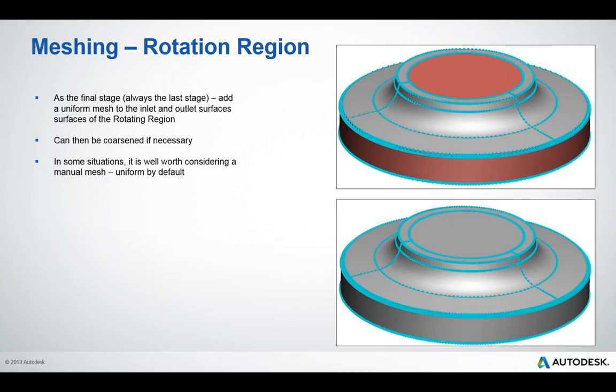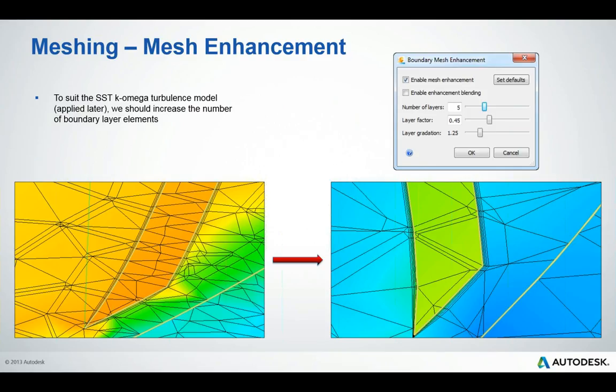The final meshing change is to suit the SST k-omega turbulence model, which we generally use for rotating models. The standard mesh uses three layers at 45% of the first element. For SST k-omega, we change to five layers, still at 45% of the first element, and change the layer gradation to 1.25, so elements become smaller and smaller closer to the wall. This reduces the Y-plus value and increases accuracy for this turbulence model.